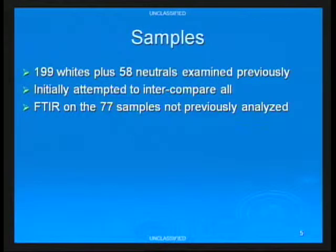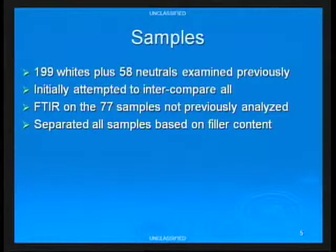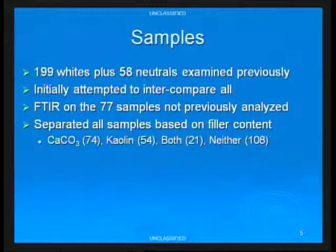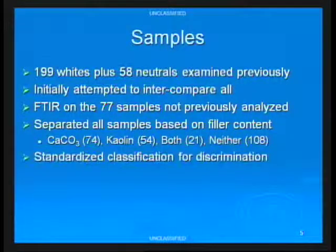The original plan was to take all of the white paints from the original study and inter-compare those, which meant we needed to perform FTIR analysis on 77 samples that previously hadn't been analyzed. The samples pretty much followed the same scheme as the previous study, separating out based on filler content — some had calcium carbonate, some had kaolin, some had both, and some had neither.